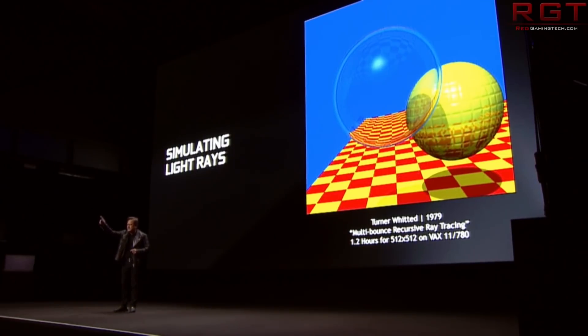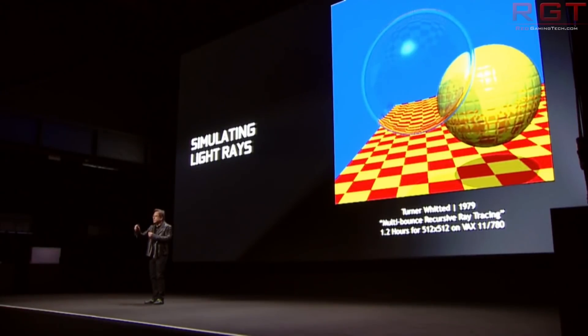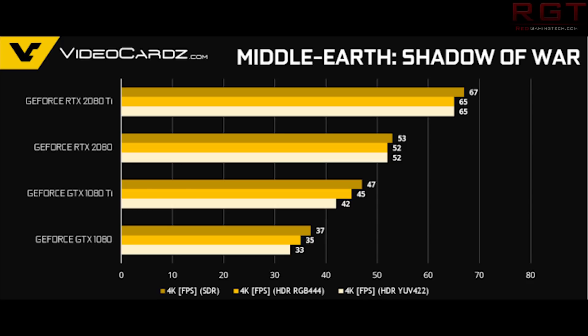Middle-earth: Shadow of Mordor is another title with SDR, HDR RGB 4:4:4, and YUV 4:2:2 results. The RTX 2080 Ti scores 65 FPS in SDR and 67 FPS in HDR — essentially identical, within margin of error. Comparing the 2080 Ti to the 1080 Ti: 65 versus 42 FPS in SDR, versus 47 FPS in HDR for the 1080 Ti. NVIDIA are really pushing the message that HDR rendering has been fixed with Turing.